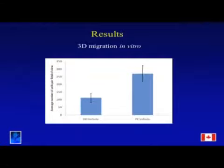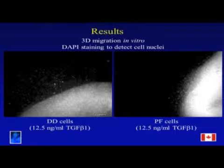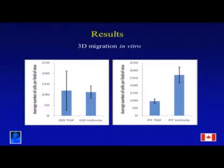We thought: TGF-beta — everybody talks about TGF-beta being associated with Dupuytren's disease, so let's try that. We put 12.5 ng/mL — a physiologically relevant dose of TGF-beta — into these cells, did the same migration assay, and there was no consistent effect on migration, though variability was higher than we would have liked. Compared to palmar fascia, we actually see an inhibition when we put TGF-beta-1 in the surrounding collagen compared to vehicle-treated cells.